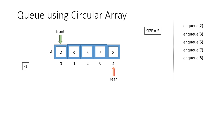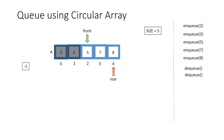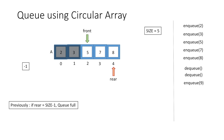Now the queue is full and we cannot enqueue any more elements. Using the dequeue function, we increment front by 1 and remove element 2. Performing dequeue again, we increment front by 1 and dequeue element 3. Now if we try to enqueue element 9, we cannot insert it because rear equals size minus 1 — the last index — so the queue is considered full.